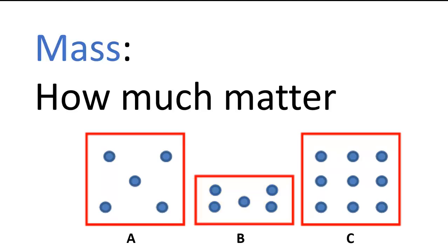Mass is a measure of the amount of matter in an object. Imagine that each blue circle represents a certain amount, maybe a gram of matter. How do the masses of these objects compare? A and B have the same mass as one another because they've got the same number of blue circles. Five. C has the most mass because it has the most blue circles. Nine.